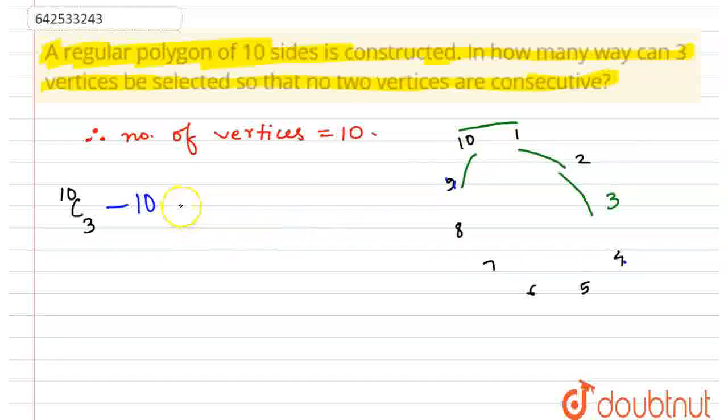There are 10 choices for consecutive vertices, but when we have chosen 2 vertices which are consecutive, the third vertex should also be chosen and it shouldn't be consecutive with them. That is, if we have chosen 10, 1, then the third vertex can't be 9 or 2. It can be from the remaining 6.